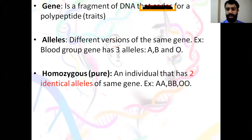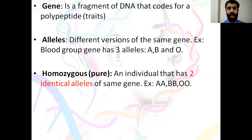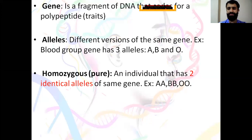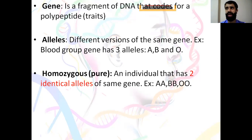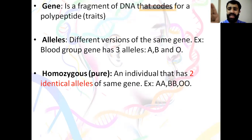Homozygous, or 'pure': you have to know both terms, though mostly we'll use the word 'pure.' Homozygous means an individual that has two identical alleles of the same gene. For example, a person homozygous for blood group A has genotype AA; homozygous for blood group B has BB; or homozygous for blood group O has OO. Homozygous means two identical alleles for the same gene.